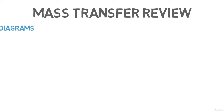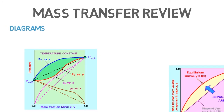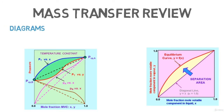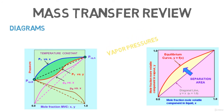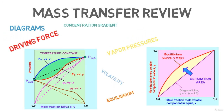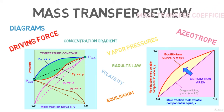First things first, we're going to start with a mass transfer review, beginning with diagrams. The most important diagrams in binary distillations are pressure versus composition, temperature versus composition, and vapor versus liquid compositions. We then continue with vapor pressure, volatility, equilibrium, driving force, concentration gradients, Raoult's law, azeotropes, and mass transfer coefficients.